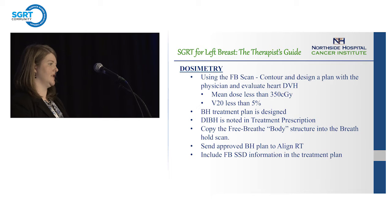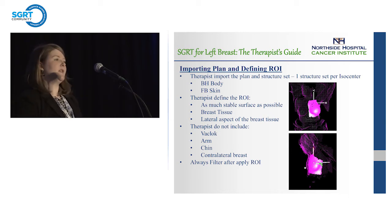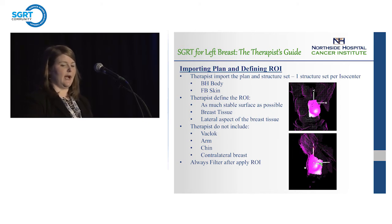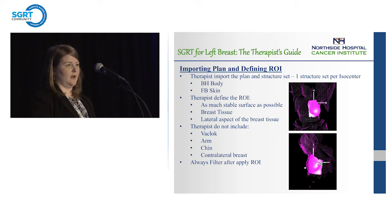When we import the plan, we import the breath hold body and the free breathe scan, then define the region of interest. We do all of this after physics has checked everything. We go pretty high up on the breast and make sure we go pretty low on the sides laterally, wanting as much stable surface as possible with only the breast tissue in the lateral aspect. We do not include the backlock, the arm, the chin, or the contralateral breast, and we always filter it to make sure it's nice and stable.